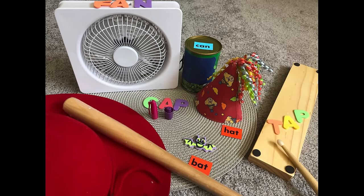Next, we looked around the house for a few items that had the short vowel A sound, a, and we found a fan, a can of vegetables, a clown hat.